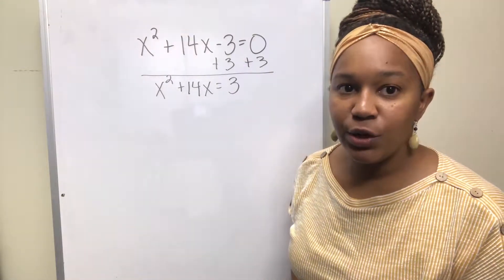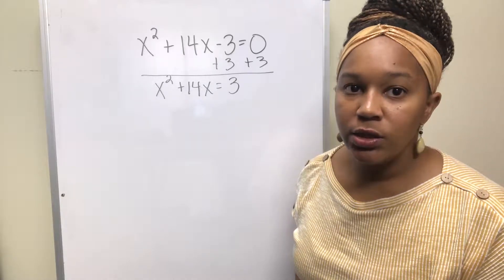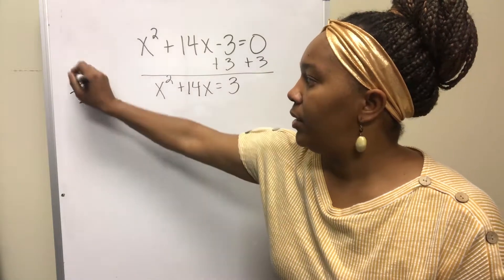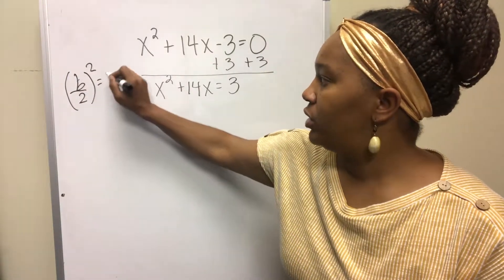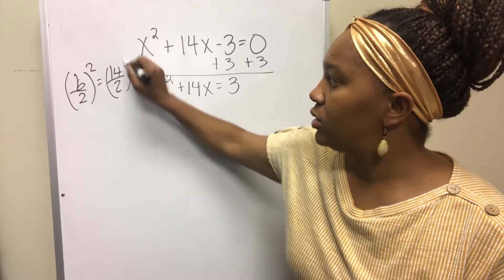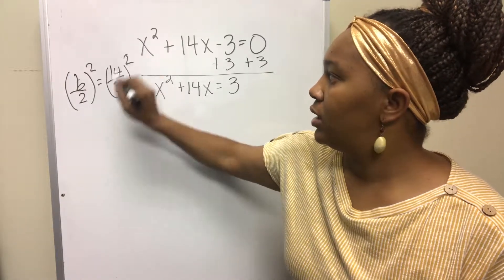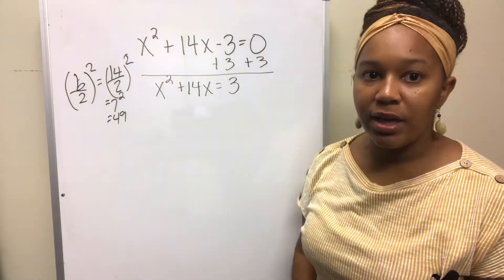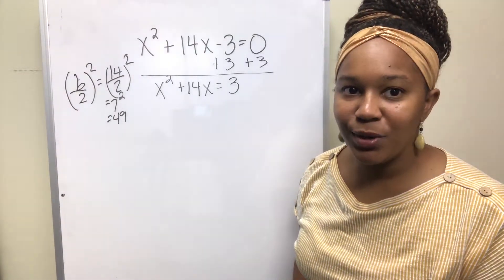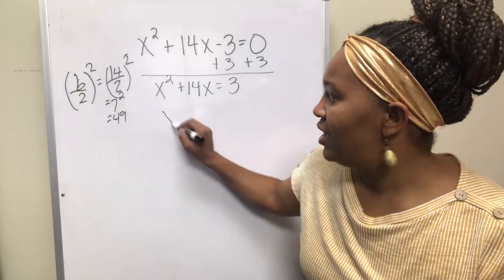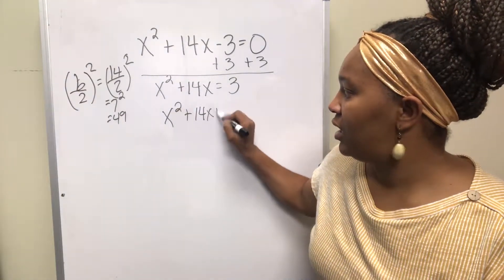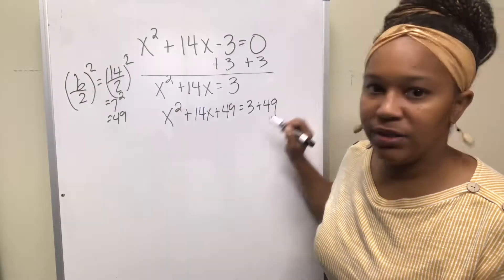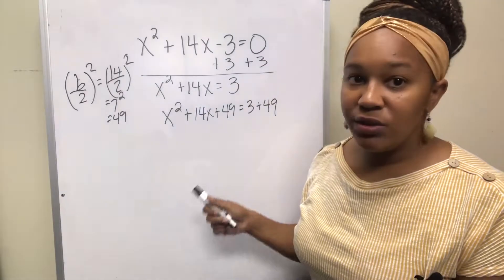Step three is where you create your perfect square. Take half of the b term and square it. Your b term is 14, so take half of 14, which is 7, and square it to get 49. That is what you want to add to both sides. So you get x squared plus 14x plus 49 equals 3 plus 49.